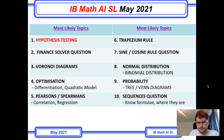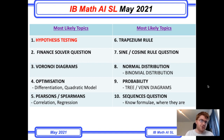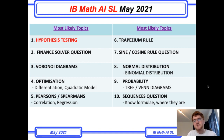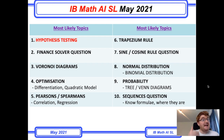Probability can be approached via a tree diagram, which I'd prefer, but Venn diagrams could also appear. I'm more of the opinion there'll be a tree diagram question, or this might be combined with binomial distribution — so topics eight and nine can merge together.